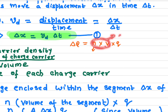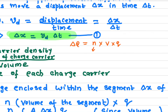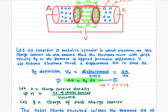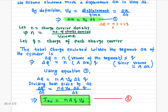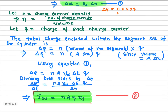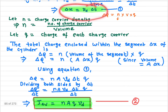N times V gives the number of charge carriers, and multiplying by the charge of each carrier gives the total charges. Now we need to find the volume of this segment. We know the cross-sectional area A, and we know this length — it's just like finding the volume of a cylinder: cross-sectional area times the length. So the volume is A times delta x, and since delta x equals Vd times delta t, we can plug that in.